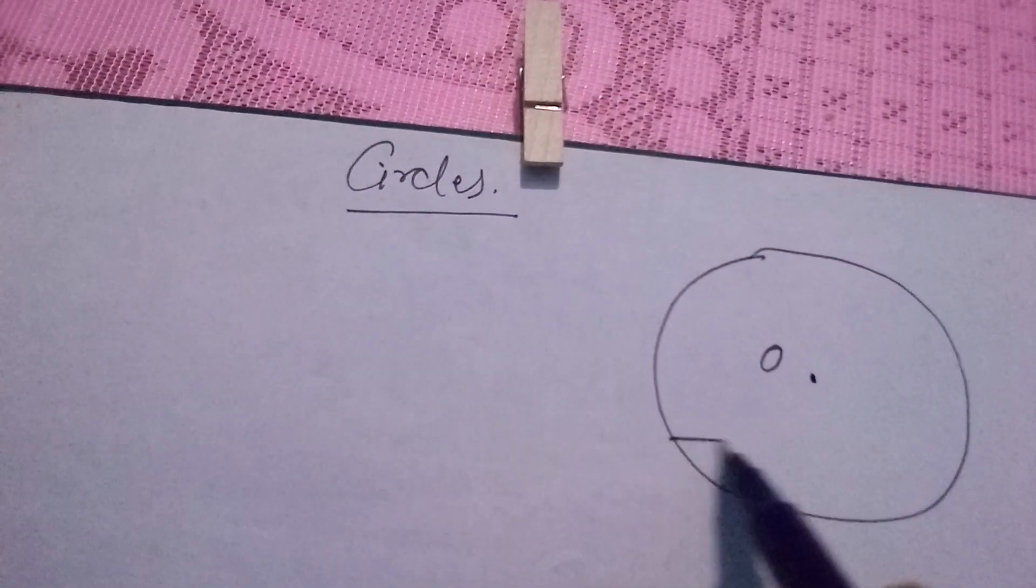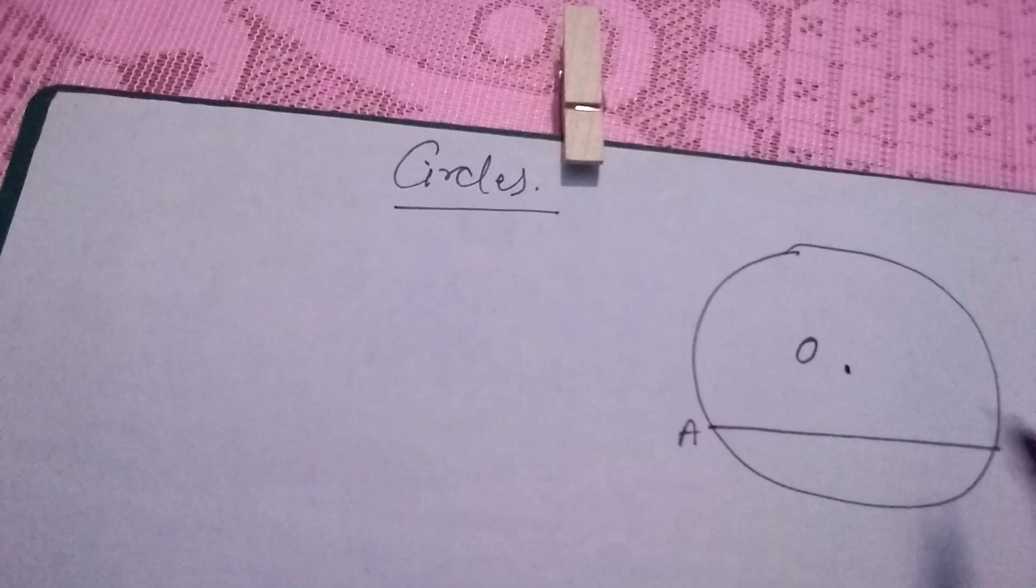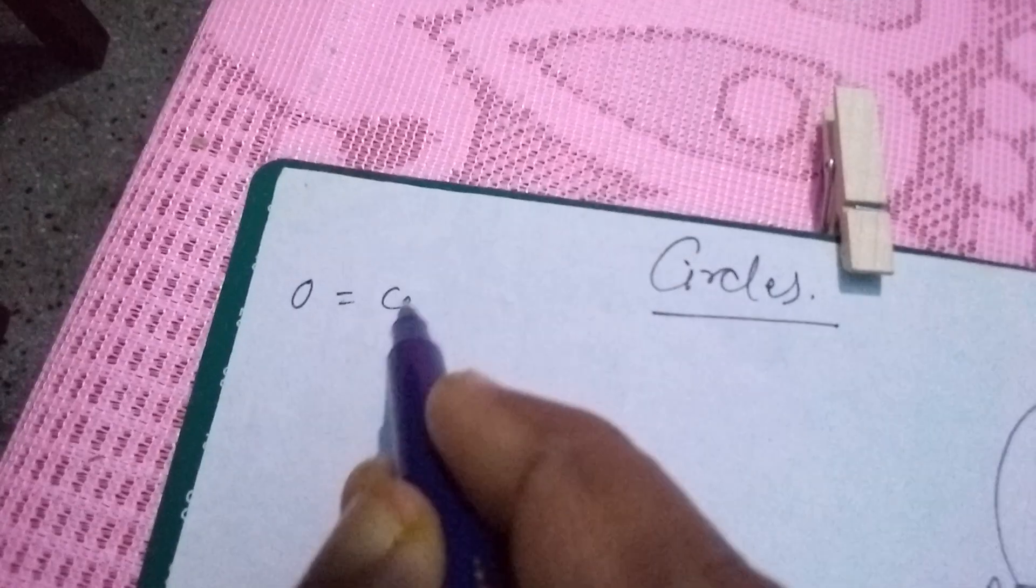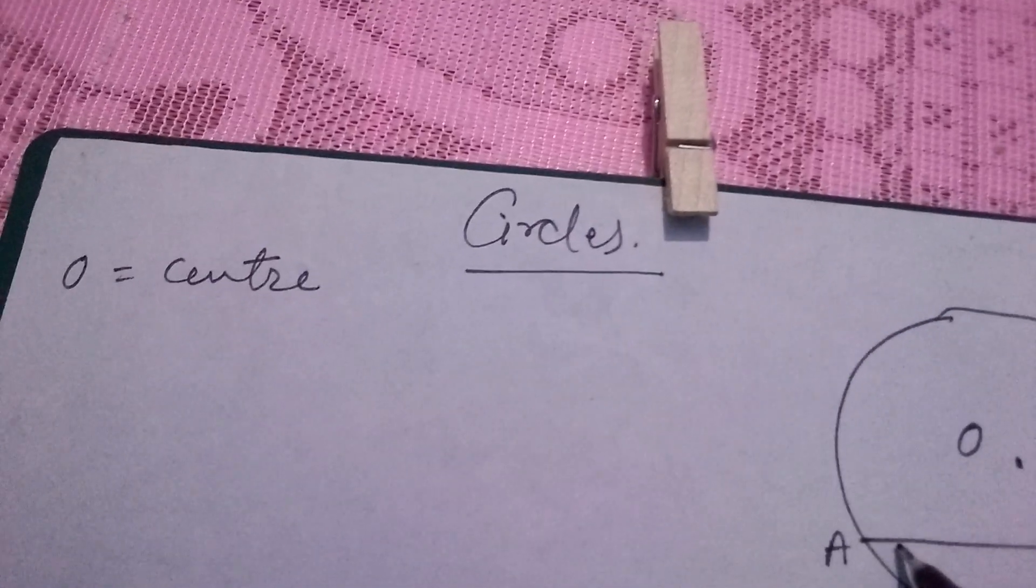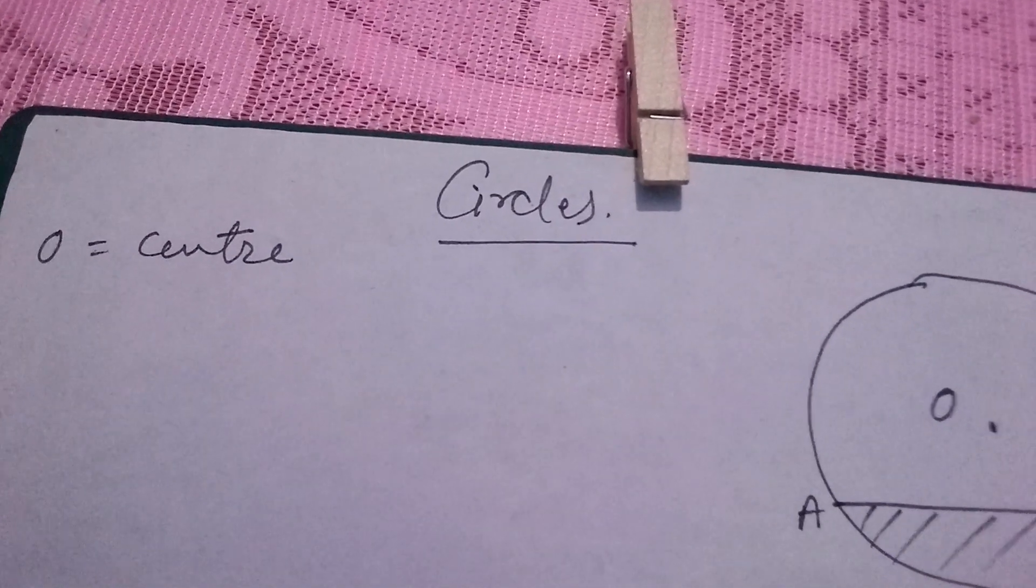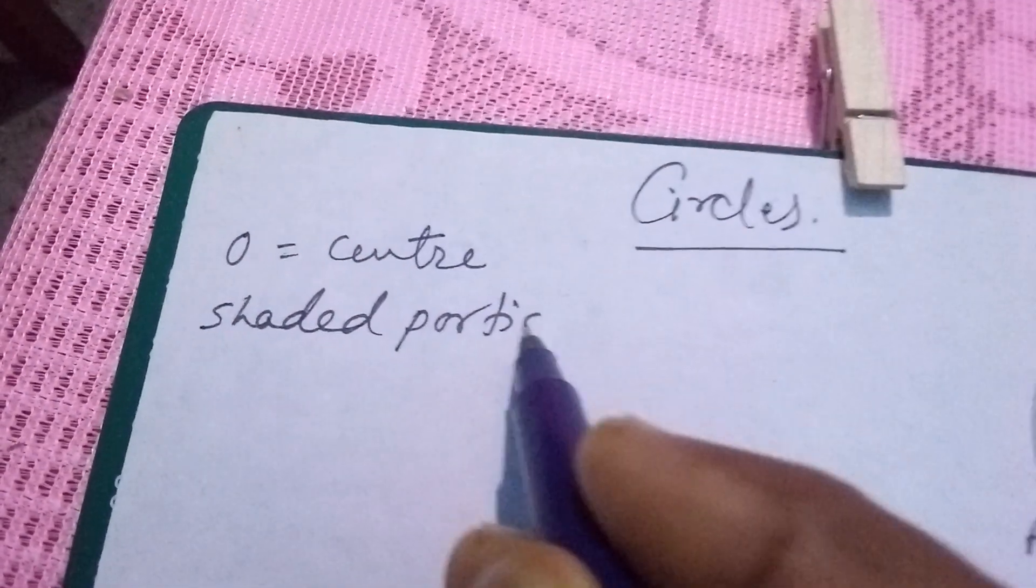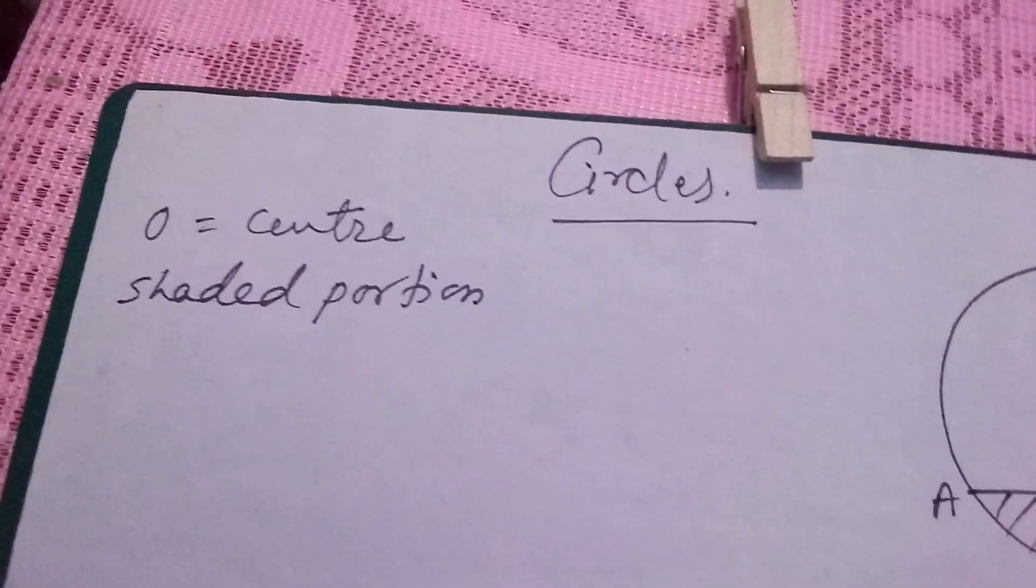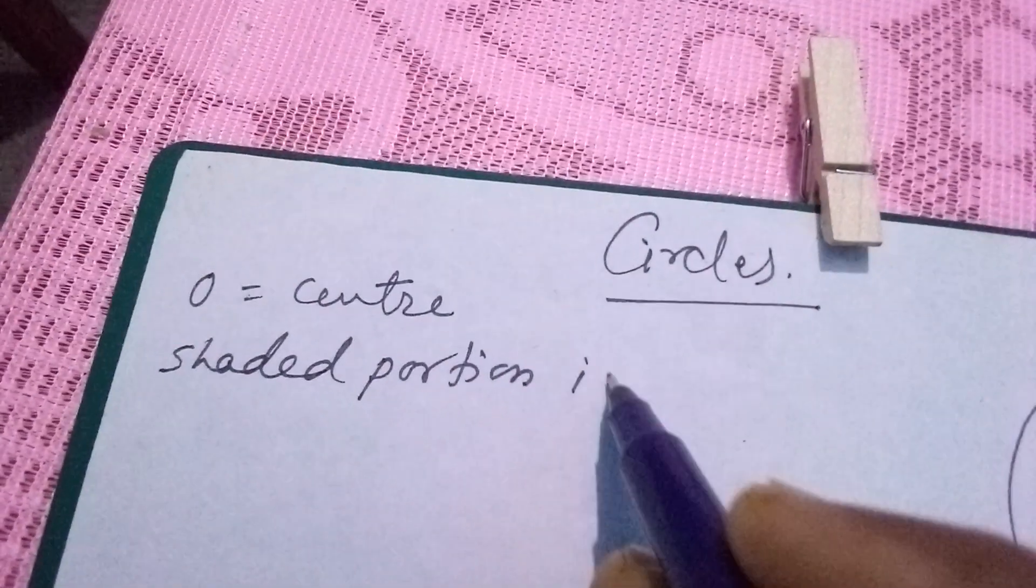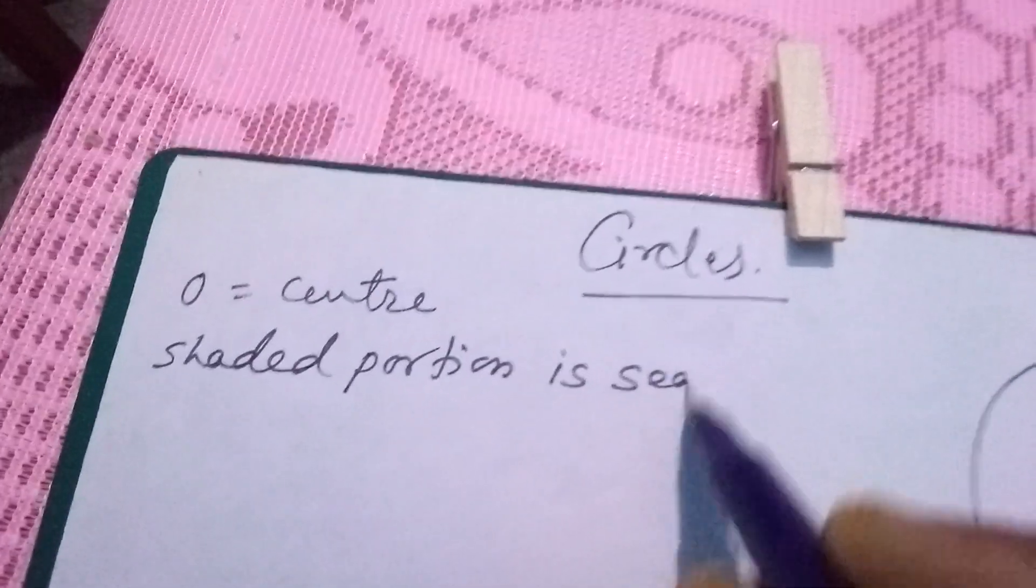See, this is O, this is AB. Then here O is what? O is center. Okay, AB, now this portion, shaded portion, shaded portion is segment.